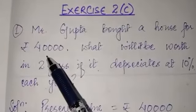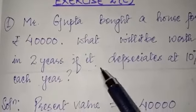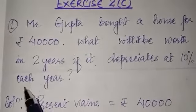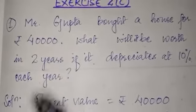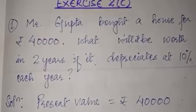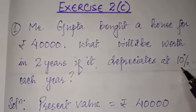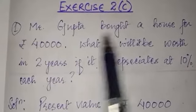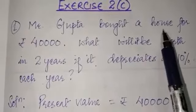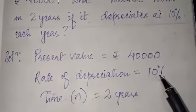Mr. Gupta bought a house for rupees 40,000. What will it be worth in two years if it depreciates at 10 percent each year? So the present value of that house is 40,000 and its cost is decreasing by 10 percent every year. You have to find its value after two years. Present value is rupees 40,000, rate of depreciation is 10 percent, time n is two years.